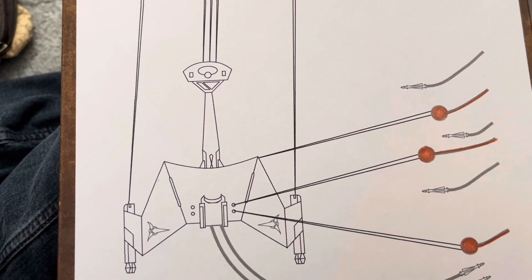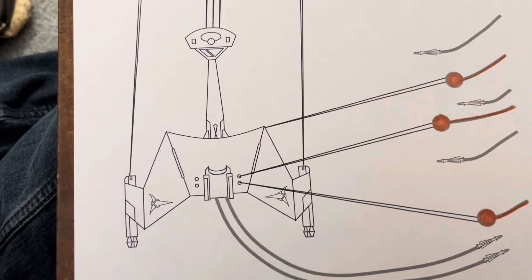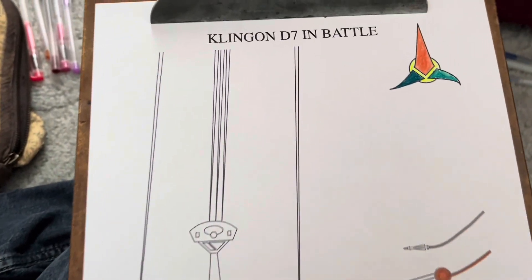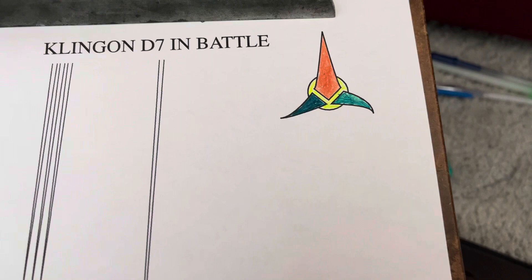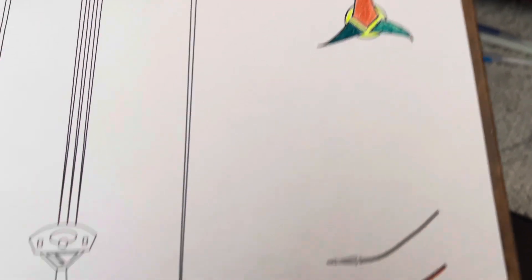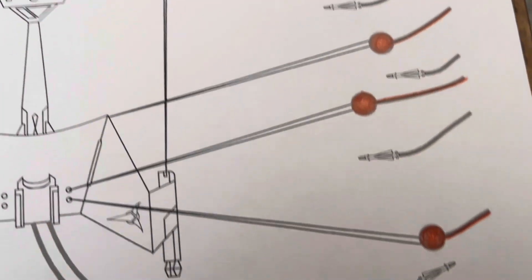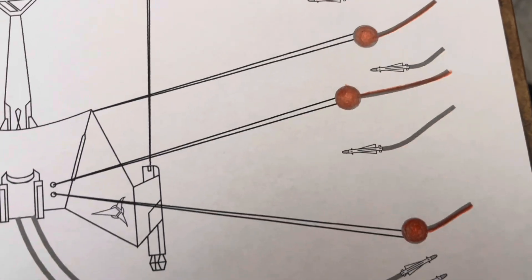Basically what this is, is a Klingon D7 in battle. I've already colored in the Klingon symbol and some plasma torpedoes headed towards the D7.